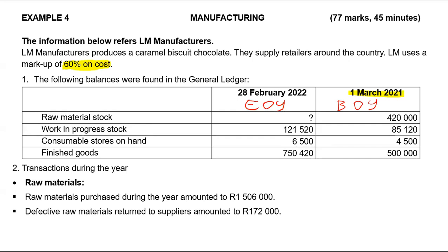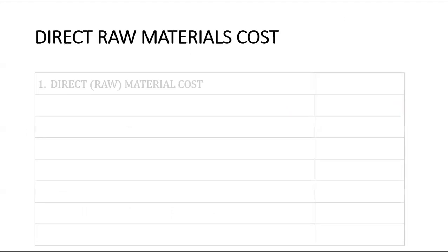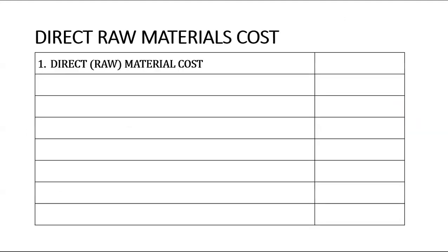I will start with raw materials stock. Raw materials stock amounts to $420,000 at the beginning of the financial year, and at the end of the financial year I am not given any balance. I will go straight to my raw materials cost note and simply record that amount. The balance at the beginning of the year is $420,000.